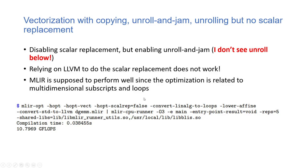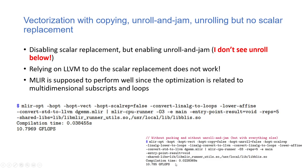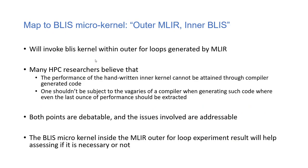One of the important topics in the paper is addressing the complaint from HPC researchers that the performance of a handwritten inner kernel cannot be attained through compiler-generated code and that every last ounce of performance must be extracted in the inner kernel. The author makes an experiment where an inner BLIS kernel is used within the outer for-loops generated by MLIR, using the same sizes as BLIS to leverage that microkernel.